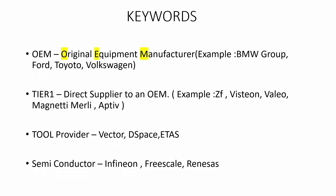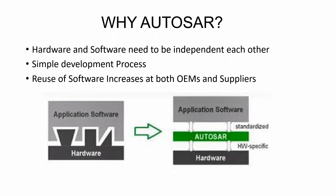Why should everyone know about AUTOSAR before entering the automotive industry? The main reason is that with more advanced development of IoT and machine learning, the applications inside cars are increasing. To support this, multiple ECUs are being deployed inside vehicles. In a normal advanced vehicle today, a minimum of 70 to 100 ECUs are used to support new applications.